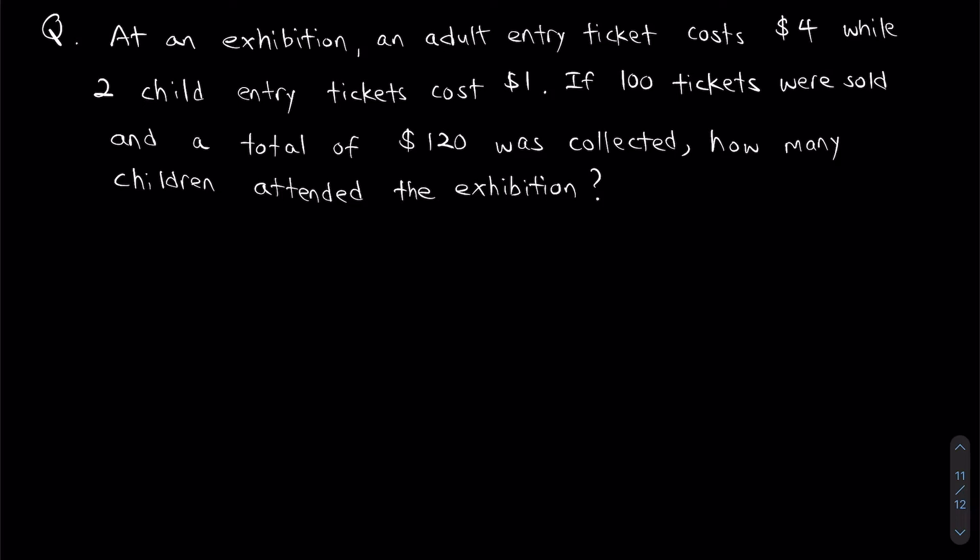Now, if we look at the phrasing of this question, it might seem kind of familiar. If you've heard of it before, this is actually a type of chicken and rabbit question — you know, the kind where it says a rabbit has 4 legs and a chicken has 2 legs. This is very similar to that kind of question.